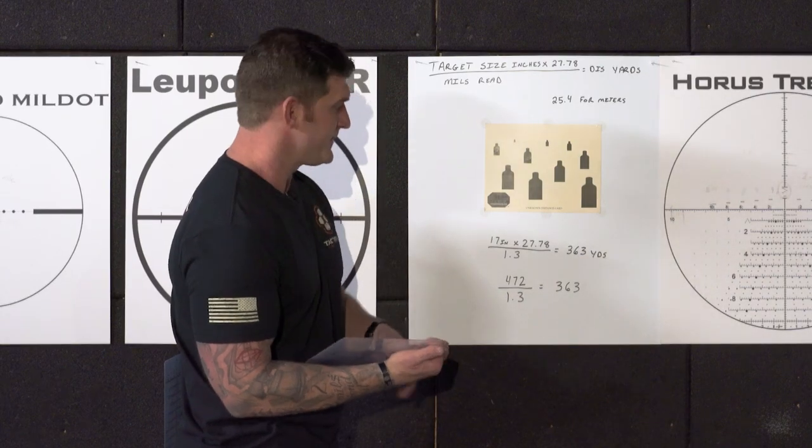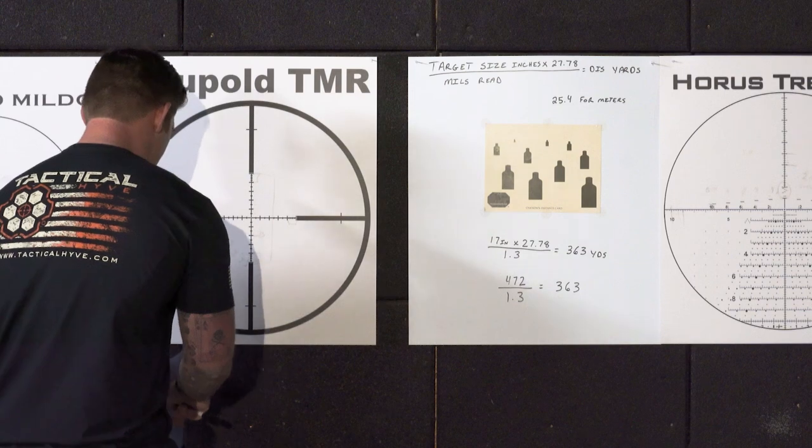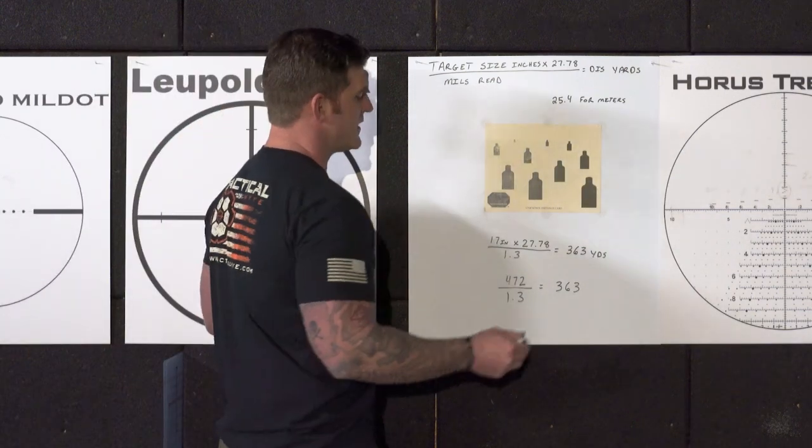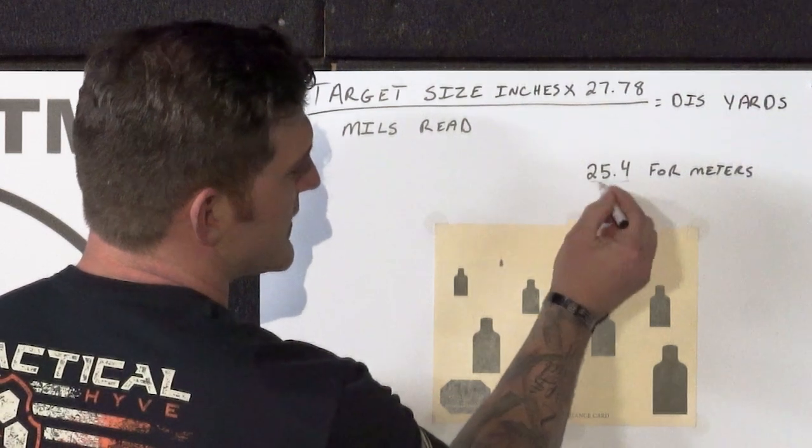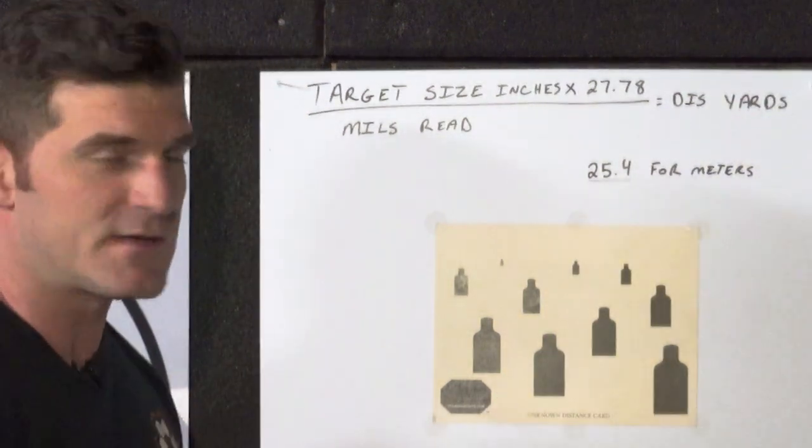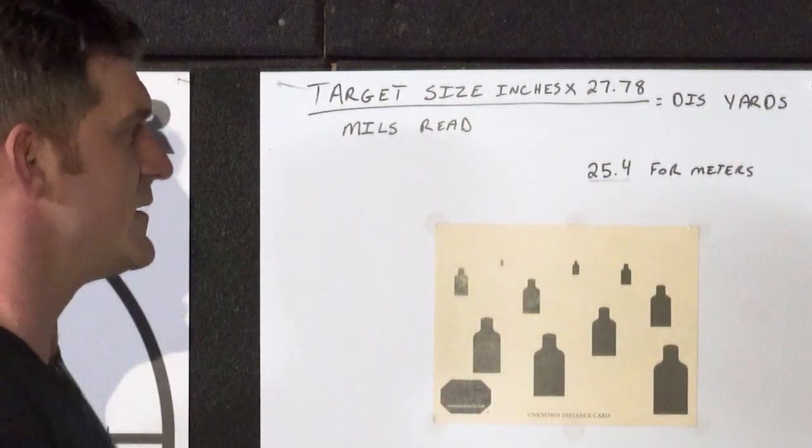Now, if you like to use meters instead of yards or you want the distance of meters, all we have to do is change that constant. Instead of it being 27.78, we'll just make it 25.4. So this will give us our answer in meters.